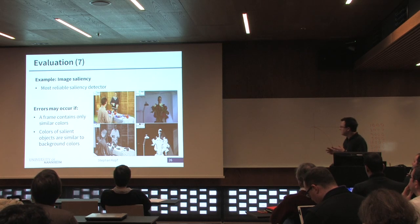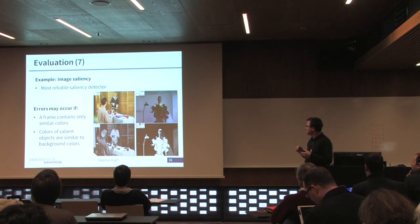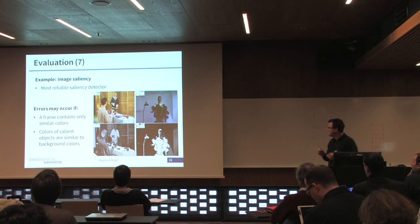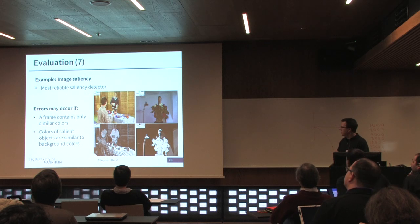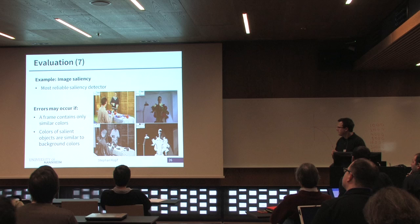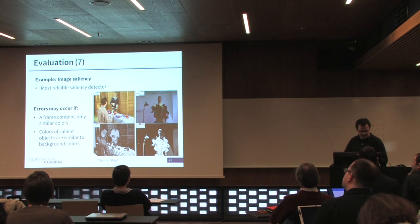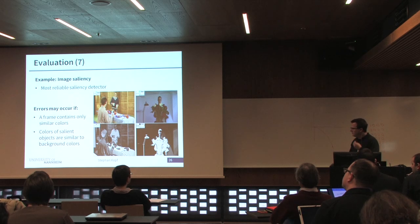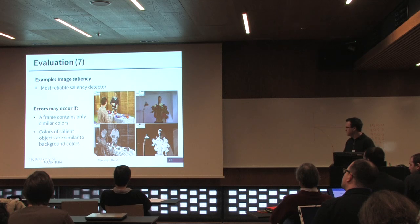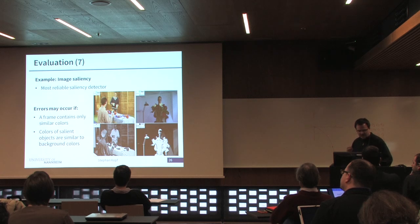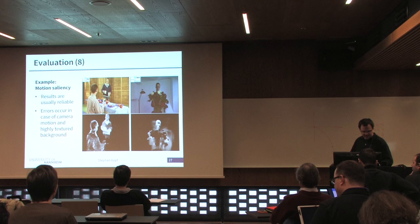Looking at the individual saliency detectors: image saliency was in our case the most reliable detector. There are only a few errors, especially if some of the colors are similar. If a really salient object like a person in the left view has a very similar color to the background, then we have some problems.